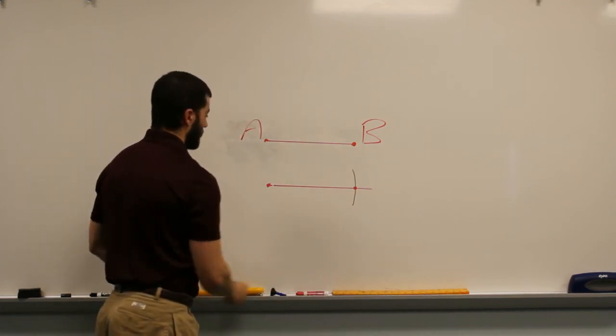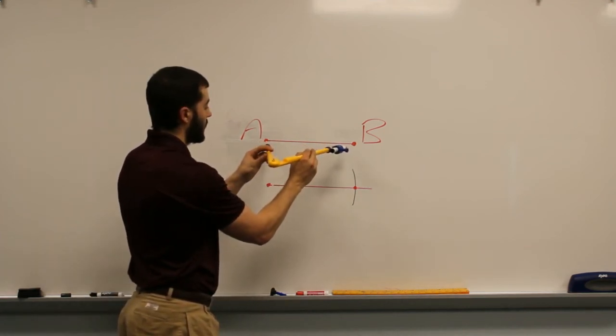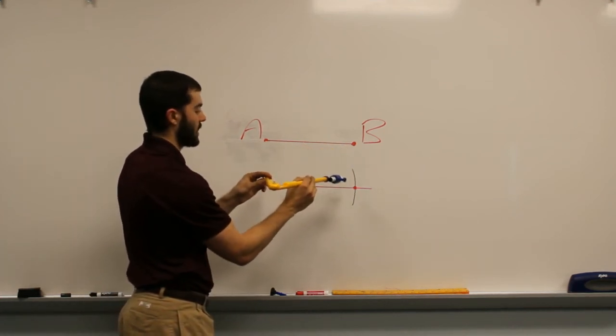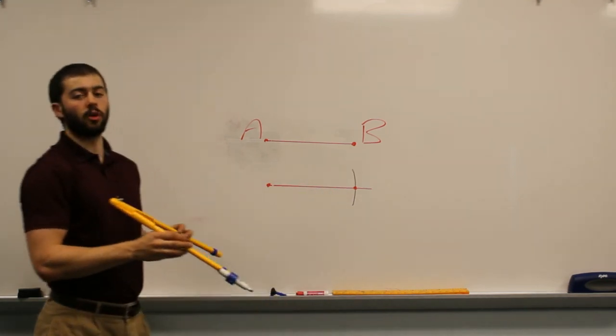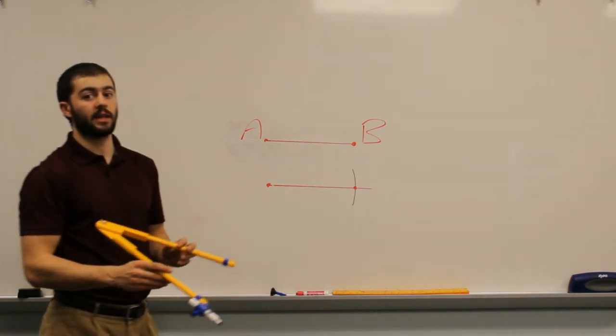So what we've done here is we've used the compass to measure the width of line segment AB and then we've taken that same width and copied it down to our new ray, which gives us a line segment that has the exact same length as the original line segment.